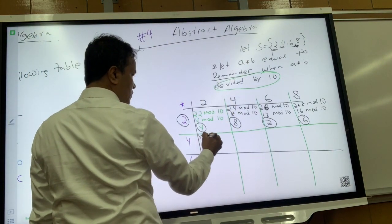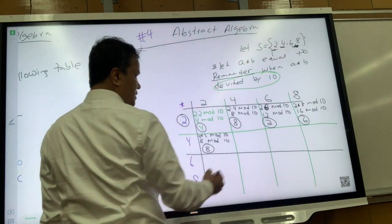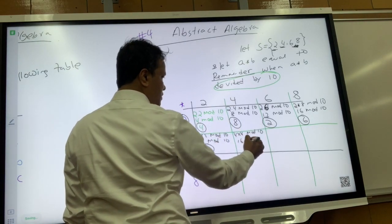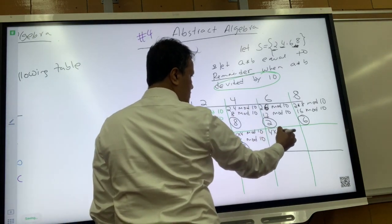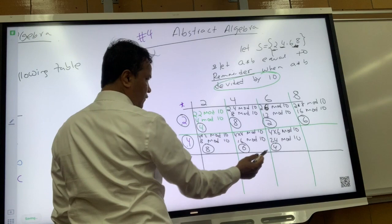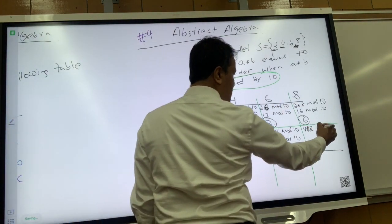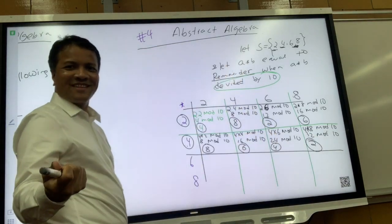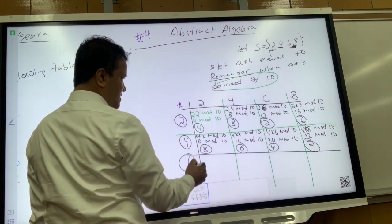Now let's do the next row. 4 times 4 mod 10 is 16 mod 10, which is 6. 4 times 6 mod 10 is 24 mod 10, which is 4 — and 4 belongs to the set. 4 times 8 mod 10 is 32 mod 10, which is 2. 2 also belongs to the set.